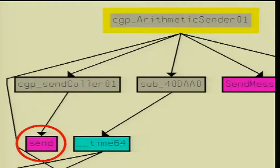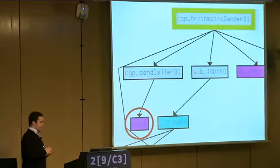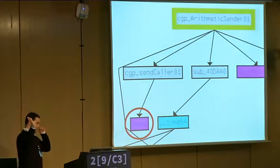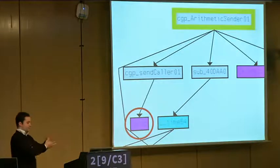Moreover, another condition to qualify as an interesting point: those functions have to be somehow near network functions. Because you realize that your data comes in, then goes along through a lot of functions, somewhere gets encrypted or hashed, and afterwards this data is going to be in a packet and sent through the network.